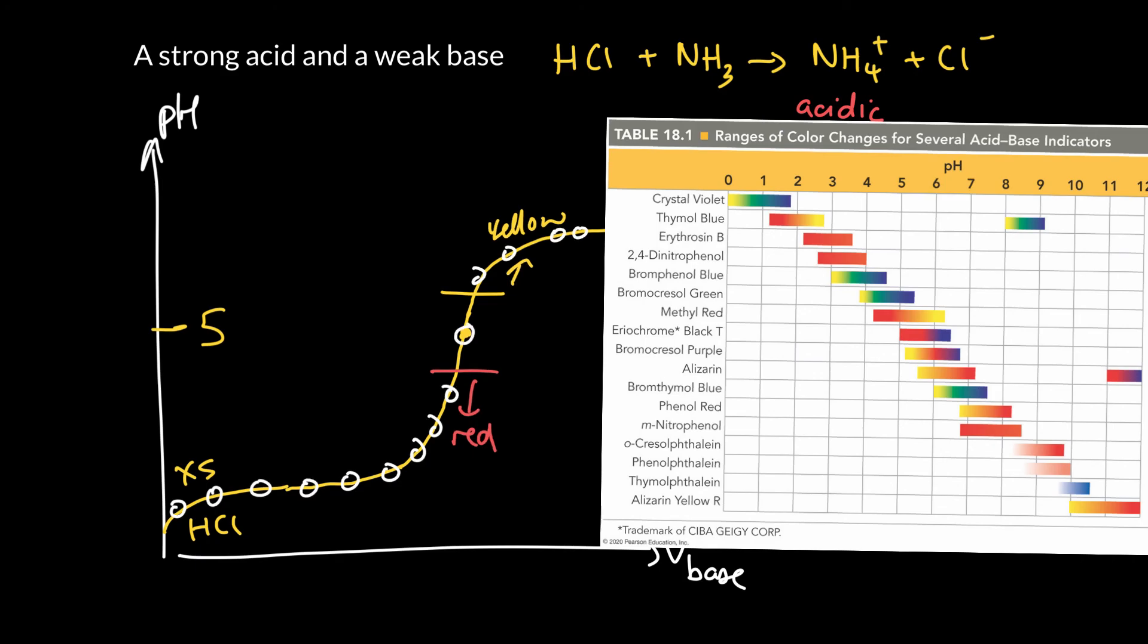Notice this curve here is so incredibly steep. One drop is going to basically take you maybe all the way up to here. So that red-yellow transition is going to be exceptionally fast. So methyl red is our indicator, and I thought it's a pretty good indicator, actually.